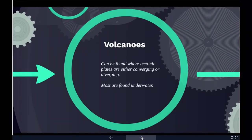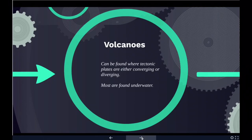Lastly, regarding volcanoes: Earth's volcanoes occur because its crust is broken into 17 major rigid tectonic plates that float on a hotter, softer layer in the mantle. On Earth, volcanoes are generally found where tectonic plates are either diverging or converging, and most are found underwater. For example, a mid-oceanic ridge such as the mid-Atlantic ridge has volcanoes caused by divergent tectonic plates, while the Pacific Ring of Fire has volcanoes caused by convergent tectonic plates — so both are possible.